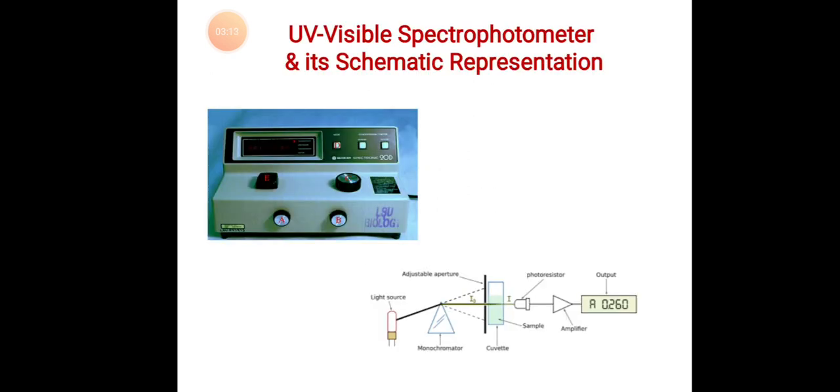This is a UV-visible spectrophotometer as well as its schematic representation. The instrument looks like in the above picture and the various components of UV-visible spectrophotometer: first one is the light source, next monochromator, next adjustable aperture, next covered sample.